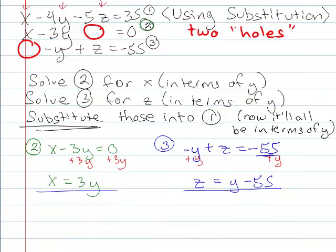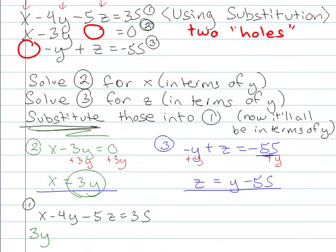So now I'm going to go back to 1, which is x minus 4y minus 5z is equal to 35. Now I'm going to substitute. So instead of x, I'm going to put 3y. So here for x, I'll put 3y.